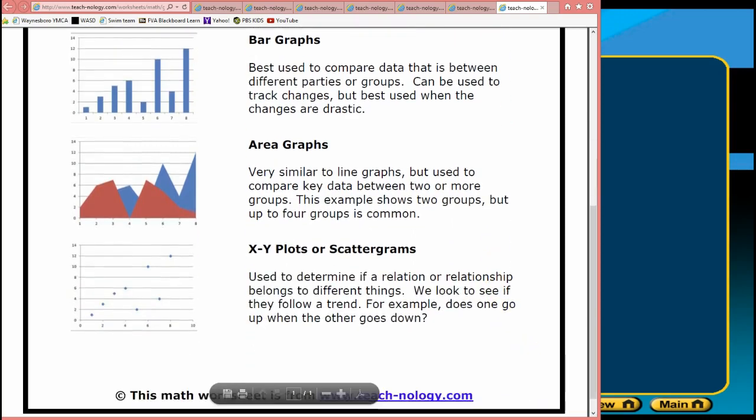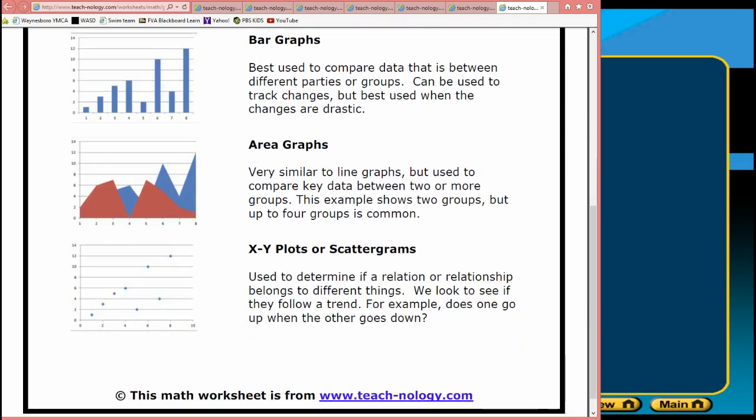X and Y scatter plots, also called scattergrams or scatter plots, are used to determine if a relationship belongs to different things. We can look to see if it's a direct relationship or an indirect relationship.